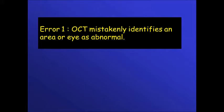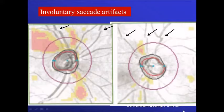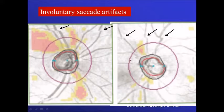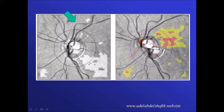The first type of error occurs when OCT mistakenly identifies an area or an eye as abnormal. One cause is saccadic eye movement, which produces interruption of blood vessel continuity. Once this happens, the 3.4 mm ring is no longer continuous — it is at one location in one area and a different location in another. You can see the vessel interrupted, so we cannot trust this area to be completely correct all around.